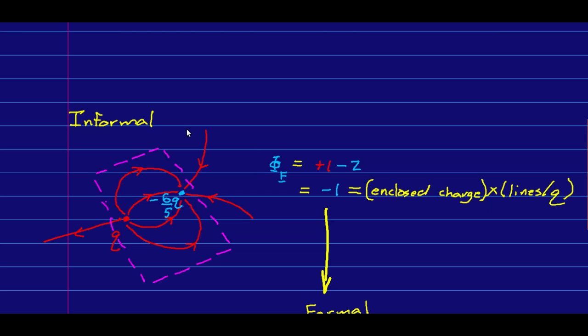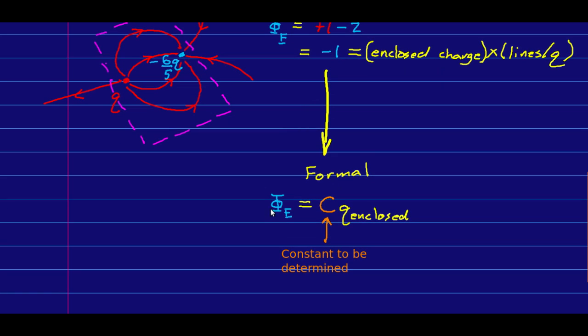Fundamentally, all we're now doing, going from our informal statement of Gauss's law to our formal statement, is defining units. In our informal way of calculating things, we had a flux, which in this case would just be one line out and two lines in. Note that these charges aren't of equal magnitude, and so that gives me a negative one, and that is equal to the enclosed charge times the lines per unit enclosed charge. So what we've got here is the idea that the flux is in some way proportional to the enclosed charge. And so that's what we want in our formal statement. We want that our flux, calculated by the new formal way we have of calculating it, is equal to some constant, a proportionality constant that we have to determine, times the enclosed charge. And so that's our goal.